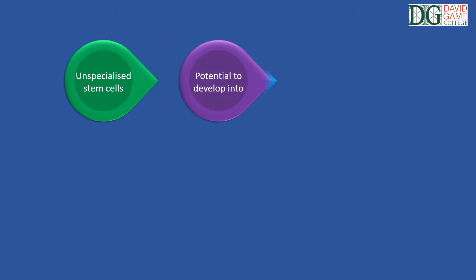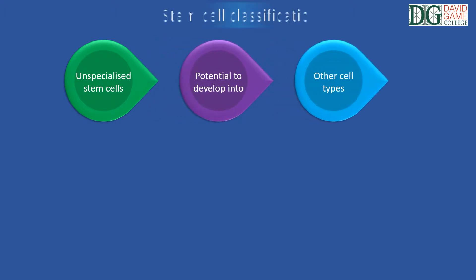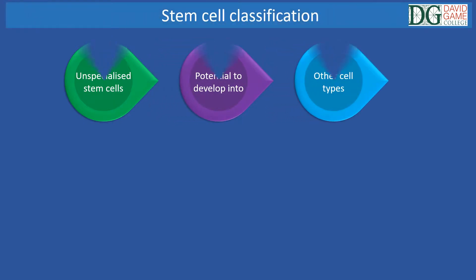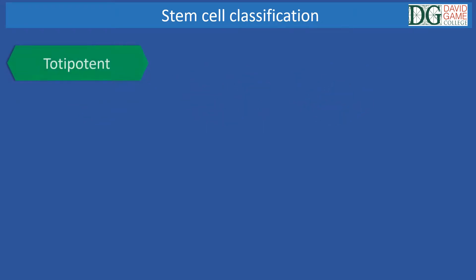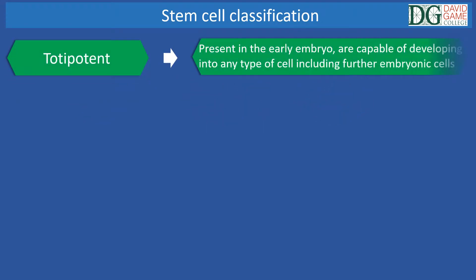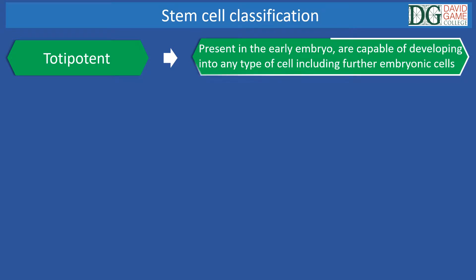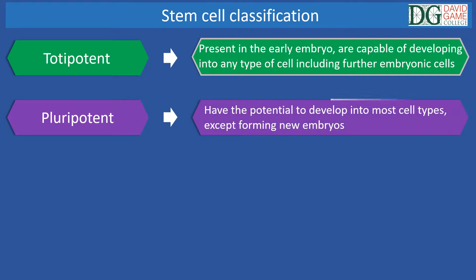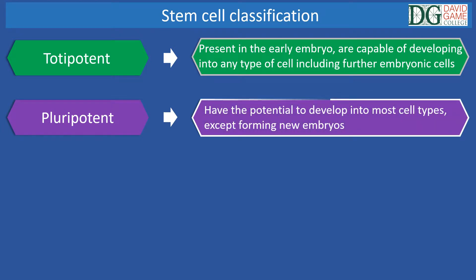Unspecialized stem cells have the potential to develop into other cell types and specialize. Now let's see stem cell classification. Totipotent cells are present in the early embryo and are capable of developing into any other cell type, including further embryonic cells. Pluripotent cells have the potential to develop into most other cell types except forming new embryos.